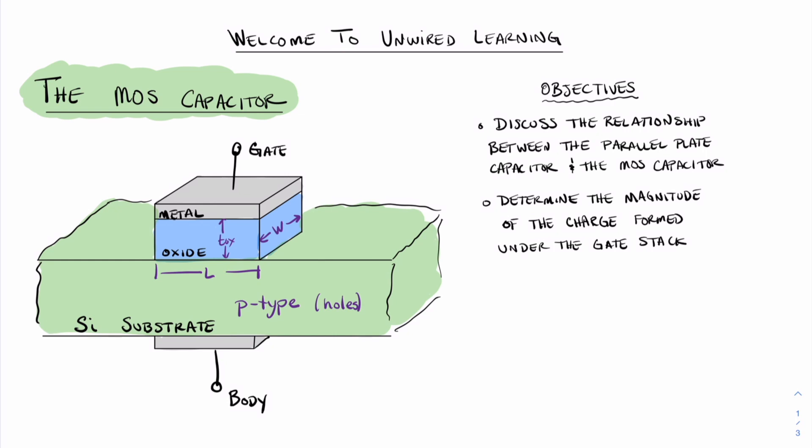Over here on the left, we see a picture of the MOS capacitor with the gate stack. We have the metal layer, the oxide layer, and the semiconductor substrate. In this case, we've identified the semiconductor substrate as silicon, and it's P-type doped. We have labeled the length of the gate and the width of the gate, as well as the thickness of the oxide, which is labeled T sub ox.